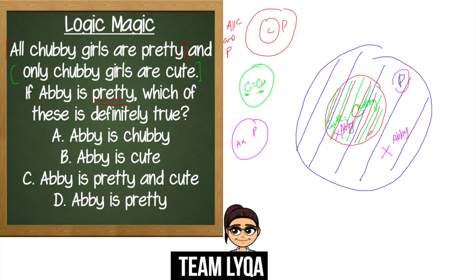We're not sure exactly where Abby is within the pretty circle. That means Abby could be cute, she could be chubby, or she might not be — because we're not certain which part of the circle she occupies. Now let's look at the options. For something to be 'definitely true,' we need to be 100% certain beyond a shadow of a doubt. Option A — Abby is chubby: if Abby is only in the outer pretty circle and not in the inner chubby area, then she's not chubby. So this is uncertain, not definitely true.